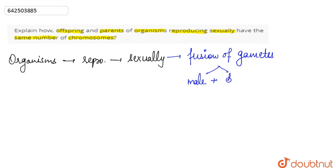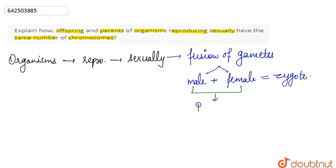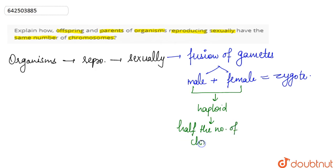The male and female gametes are both haploid in nature — they consist of half the number of chromosomes that are actually present in each cell. So the male and the female gamete each consist of half the number of chromosomes.